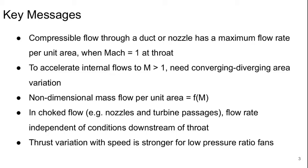The key messages to take away from this lecture are that the compressible flow through a duct or a nozzle has some kind of maximum flow rate per unit area, and that occurs when the Mach number is 1 at the throat or the minimum area. To accelerate any internal flow above Mach 1 to supersonic conditions, you need a converging-diverging area variation. The non-dimensional mass flow per unit area is purely a function of Mach number for a given gas. In choked flow — for example, nozzles and turbine blade passages — the flow rate is independent of the conditions downstream of the throat. This is the really weird thing about choked flows, and it's going to drive much of the way that we have to think about the analysis of our flow in our jet engine.